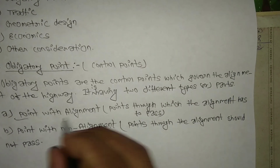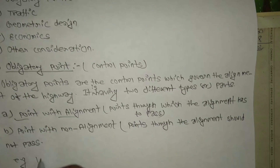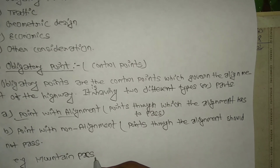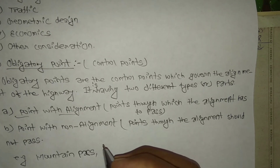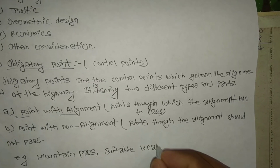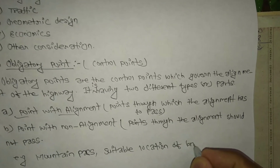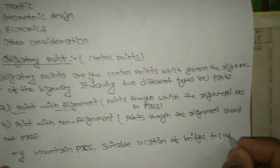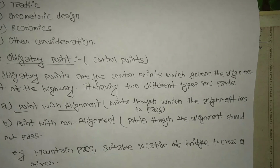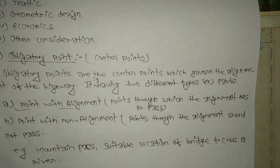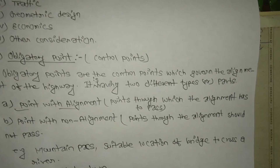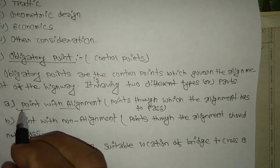Examples of points with alignment include mountain passes, suitable locations of a bridge to cross a river, and intermediate towns.